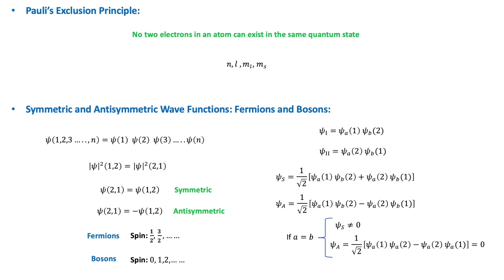We will now see that this is because the electron is actually a fermion. Let's first consider that we have a system of N non-interacting particles. Then the complete wave function of the system can be expressed as the product of the wave functions of the individual particles. We can use this to find the wave functions used to describe a system of two identical particles.